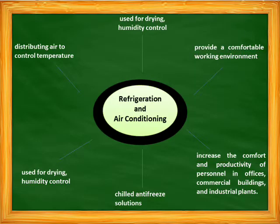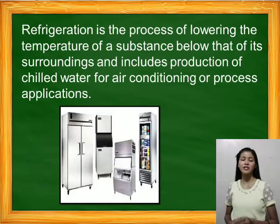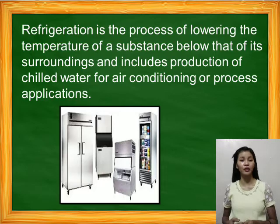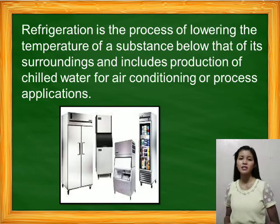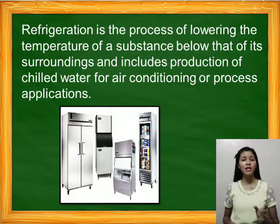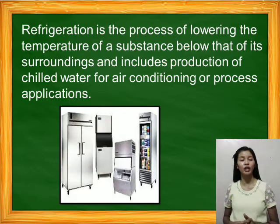All your answers are suited to our discussion for today, which is refrigeration and air conditioning. Refrigeration system is the process of lowering the temperature of a substance. This includes the production of chilled water for air conditioning and the process of application. Refrigeration system is at the heart of the AC system, which has a heater and ventilation system, and this type is used for self-contained refrigerant circulation and chilled water circulation.